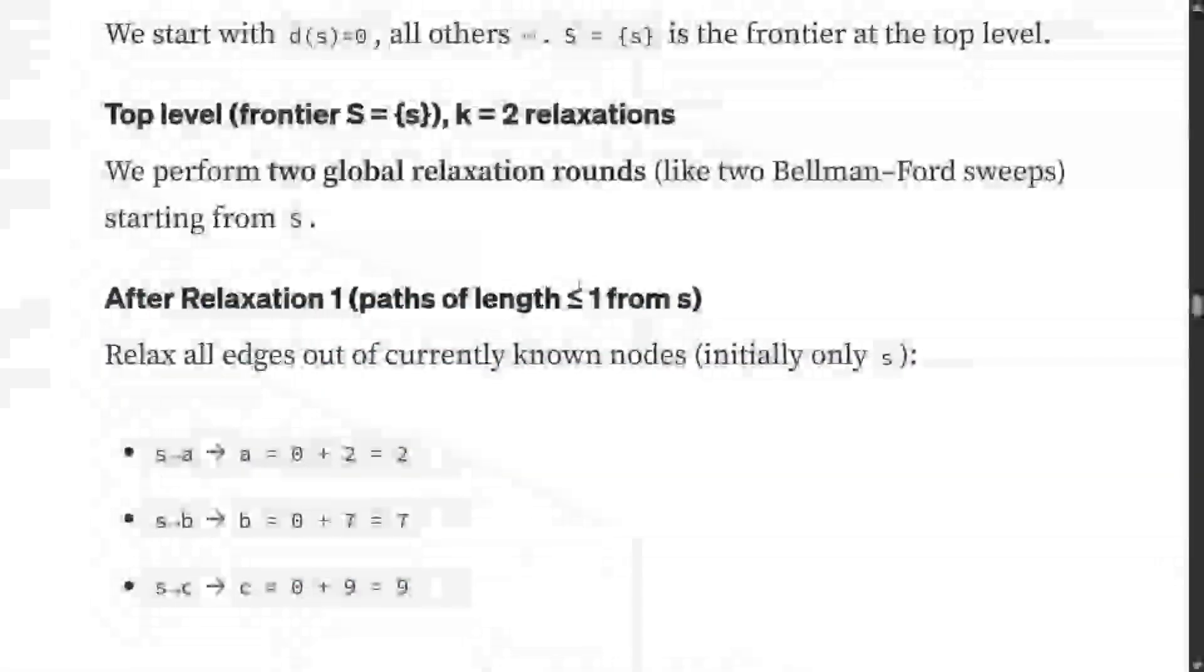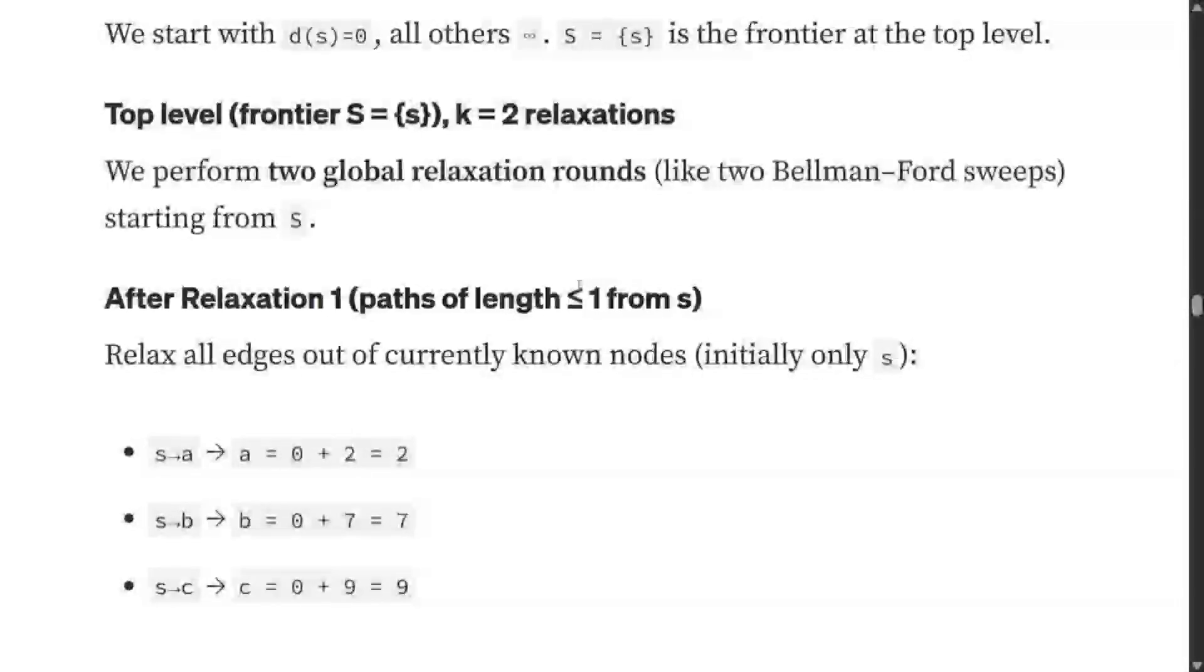Let's get started with the example. Top level frontier is S, and K equals 2 relaxation. There's a hyperparameter you need to choose in the algorithm. K equals 2 means you will be performing two global rounds of relaxation, updating the weights if there is a shorter path available. After the first round of relaxation, that means hop count 1.